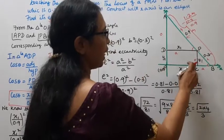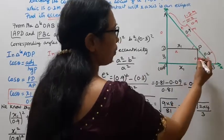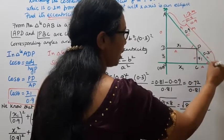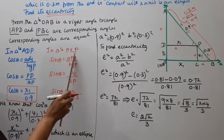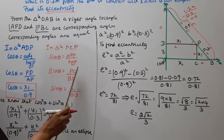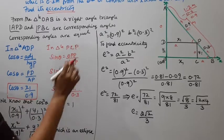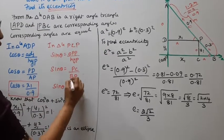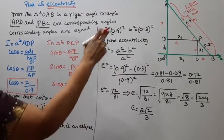In triangle PCB, sin theta equals opposite by hypotenuse. Sin theta equals PC by BP. Opposite side y1 by PB, which is 0.3.